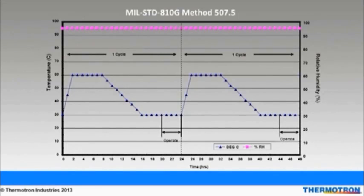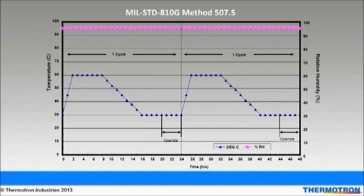This figure is from MIL-STD 810G Method 507.5 and the procedure is called Aggravated Cycle. Its purpose is to subject a product to elevated temperature and humidity conditions. The cycle begins with 95% relative humidity at 30 degrees Celsius and then it heats up to 60 degrees Celsius. Then the temperature stays at 60 degrees Celsius for six hours.